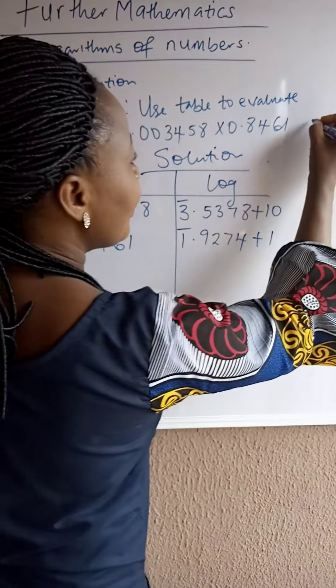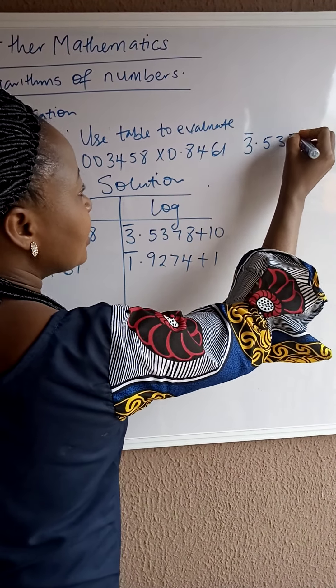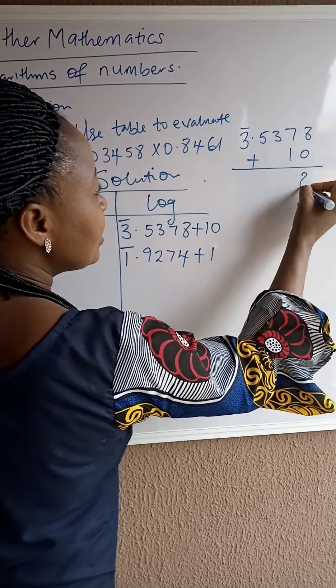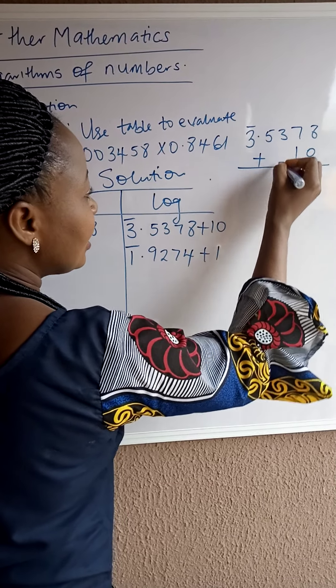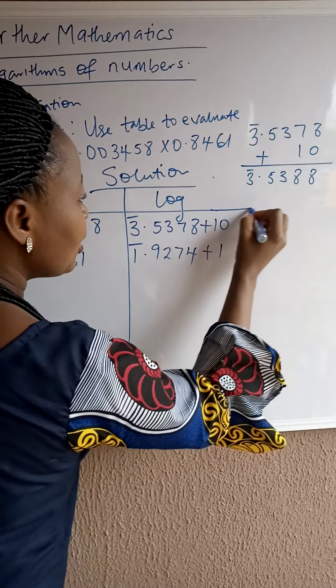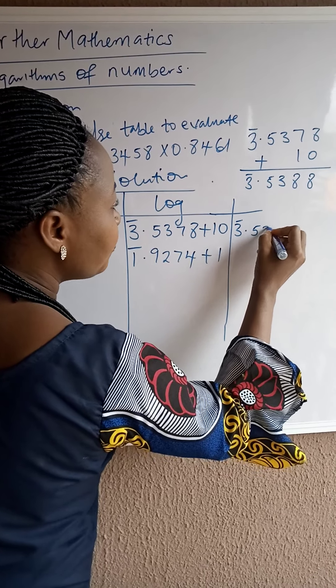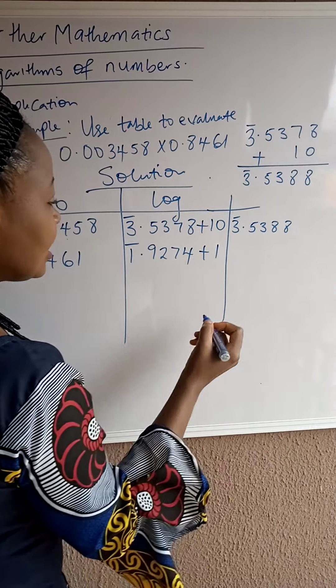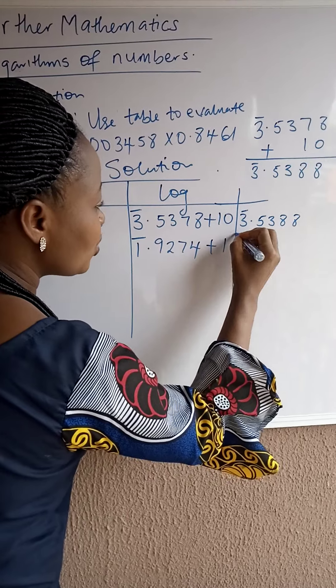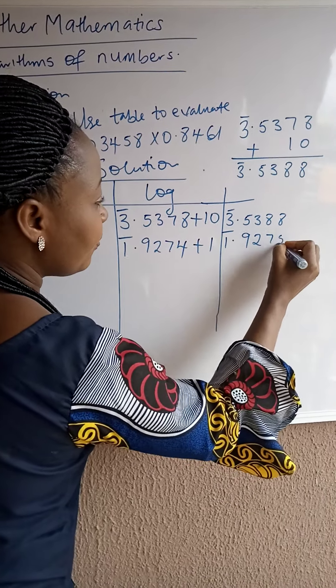I would like to rewrite this by saying that's bar 3.5378 plus 10, which is the difference. 8 plus 0 is 8. 7 plus 1 is 8. Then, 3, 5. That's bar 3. We are going to rewrite it here by saying bar 3.5388. Then, here we add 1 plus 4. That would give us 5. So, we are going to write it to be bar 1.9275.